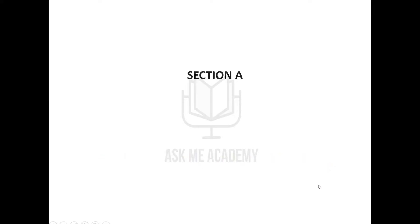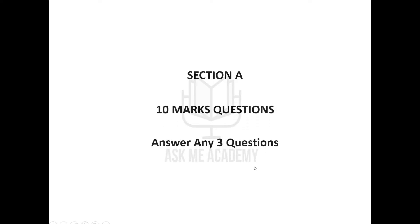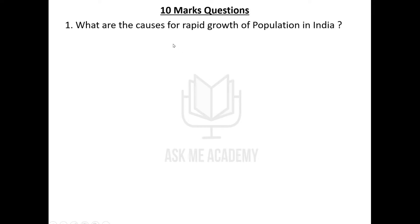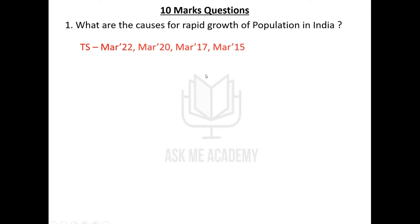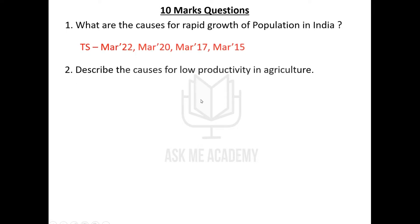First we are going to see Section A questions, which carry 10 marks each, and you have to answer any three of the given questions — you have a choice. The first 10-mark question is: What are the causes of rapid growth of population in India? It has been asked four times in those six papers.